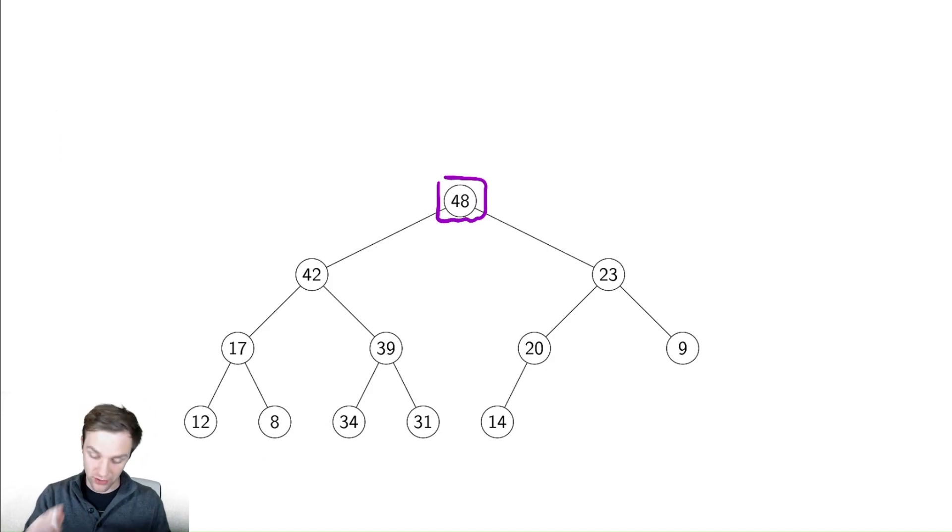It also has the very desirable property of being a nearly complete binary tree. We will always insert nodes so that we are only missing locations on the far right of the tree. We will never insert a node over here while there is a possible location over here to insert it.